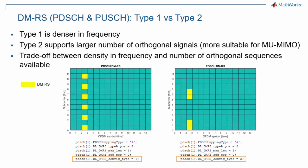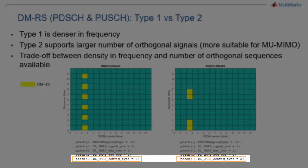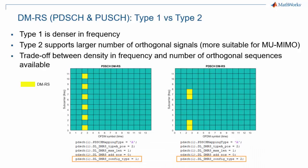Whether type 1 or 2 is used is a higher layer parameter, represented by DL-DMRS-ConfigType in 5G toolbox. The picture on the left has this parameter set to 1, and the picture on the right has it set to 2.